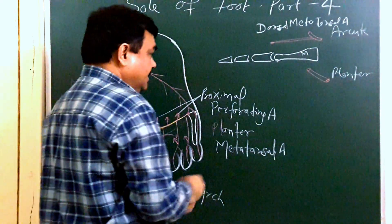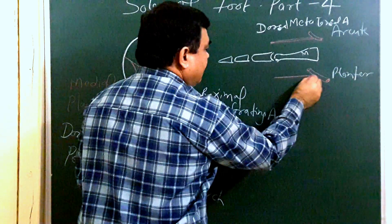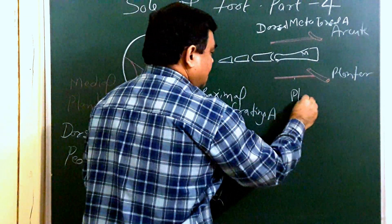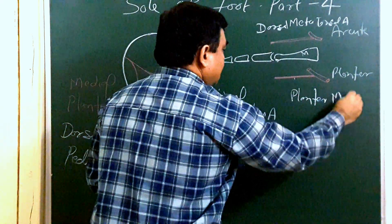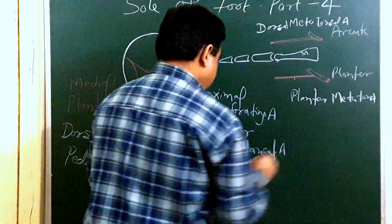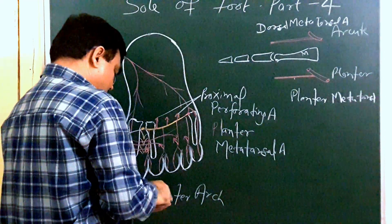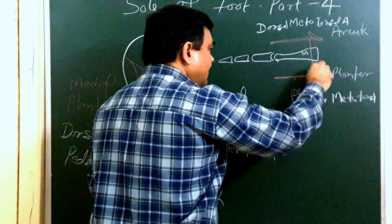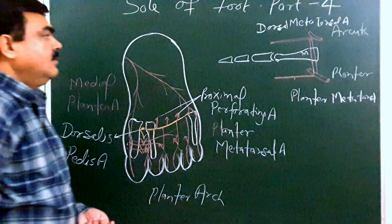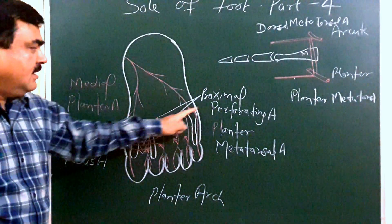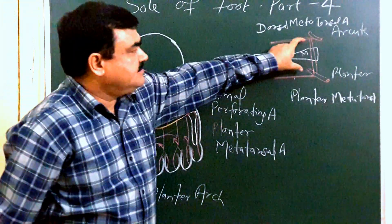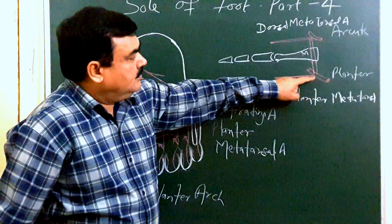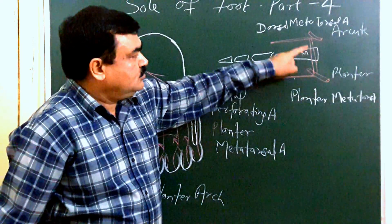From here the plantar arch gives a branch to the dorsal metatarsal artery, and also a branch to the plantar metatarsal artery. Here is the proximal perforating artery, which communicates between the plantar surface and the dorsal surface.